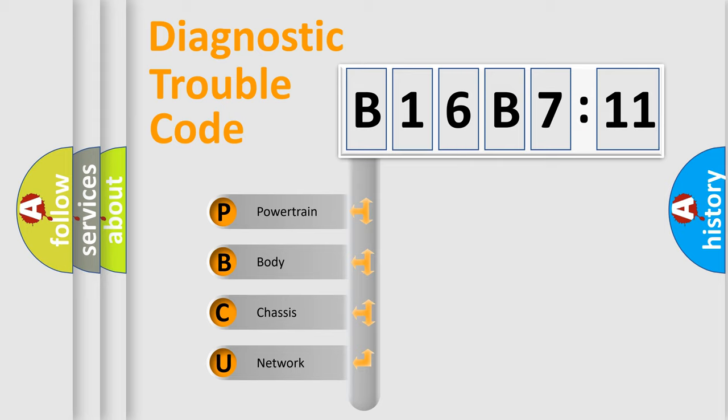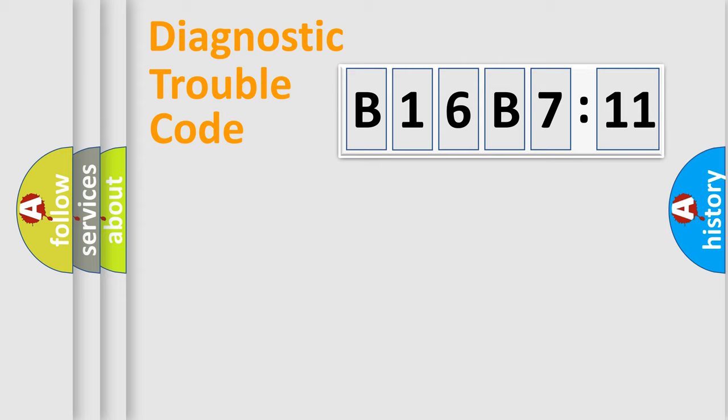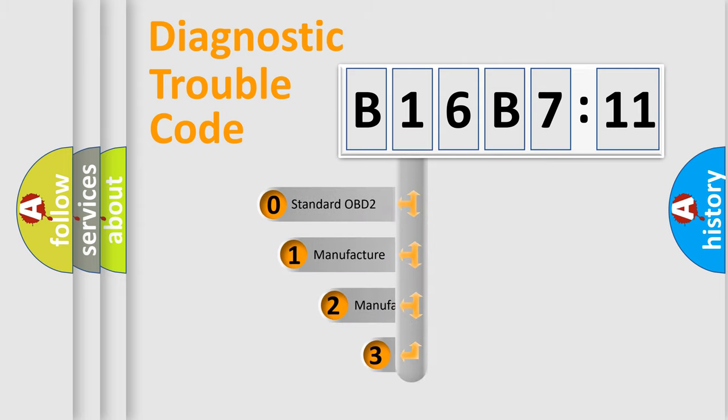We divide the electric system of automobile into four basic units: Powertrain, Body, Chassis, and Network. This distribution is defined in the first character code.